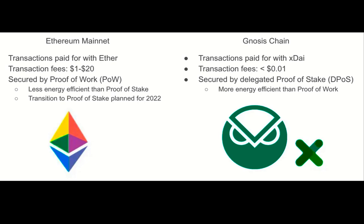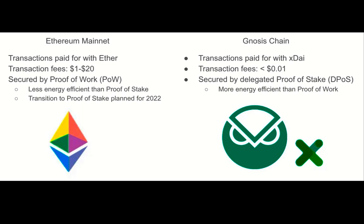The Ethereum mainnet is currently secured by proof-of-work, but is planning to transition to proof-of-stake in the summer of 2022. Now that we've looked at some of the differences between Ethereum mainnet and the Gnosis chain, let's look at how to fund our Web3 wallet on the Ethereum mainnet.